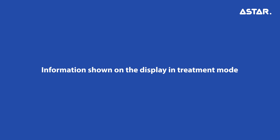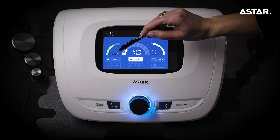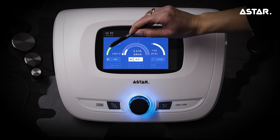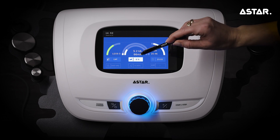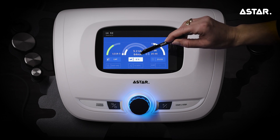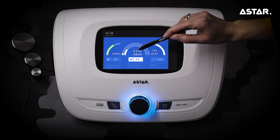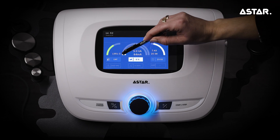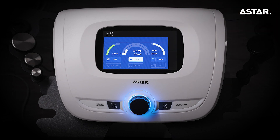Information shown on the display in treatment mode: Patient's impedance — the better the contact between the electrode and the patient's body, the more filled the indicator is. Current delivered to the patient at a particular time, value given in mA. Power delivered to the patient at a particular time — the more power is delivered, the more filled the indicator is.